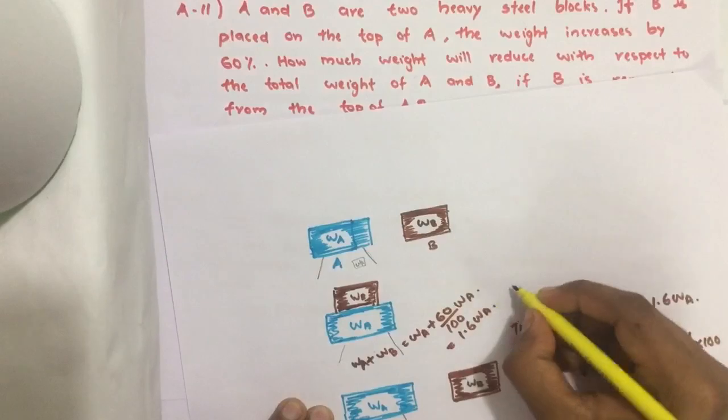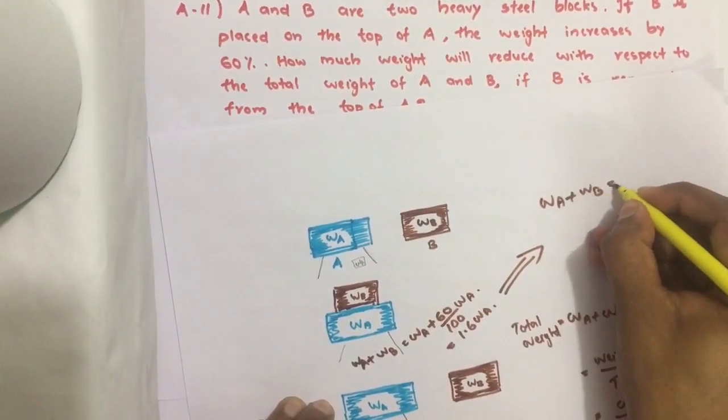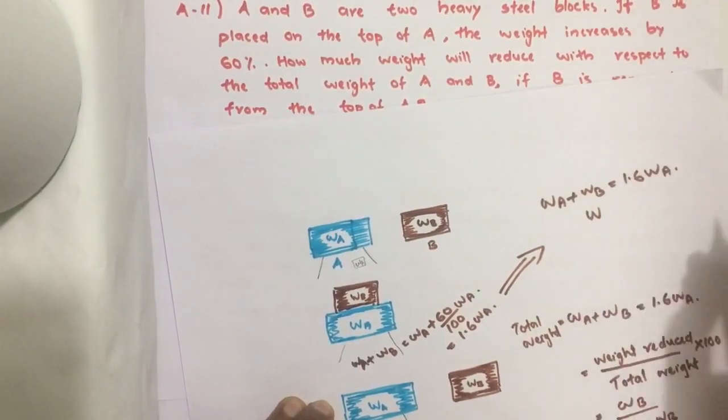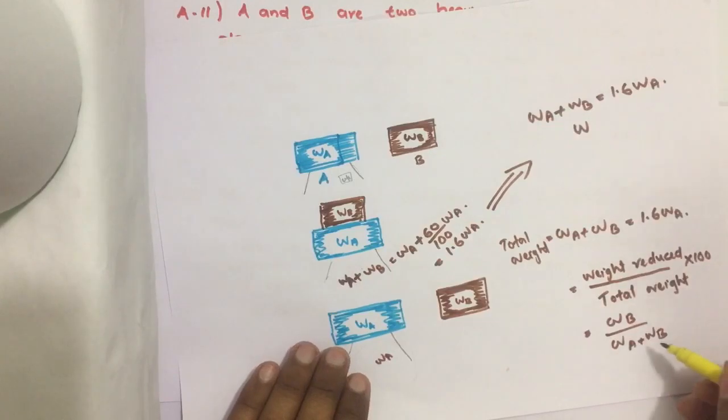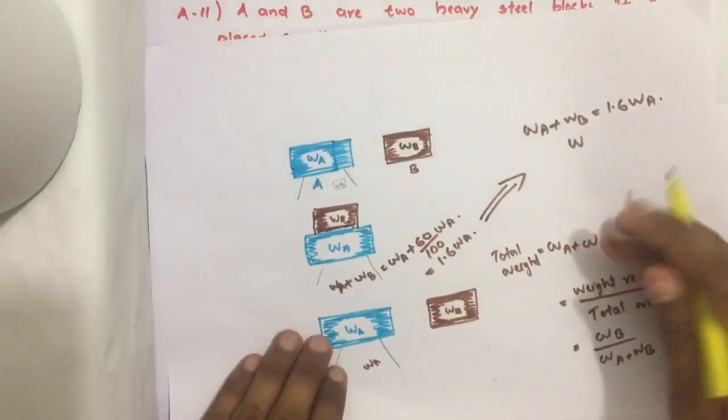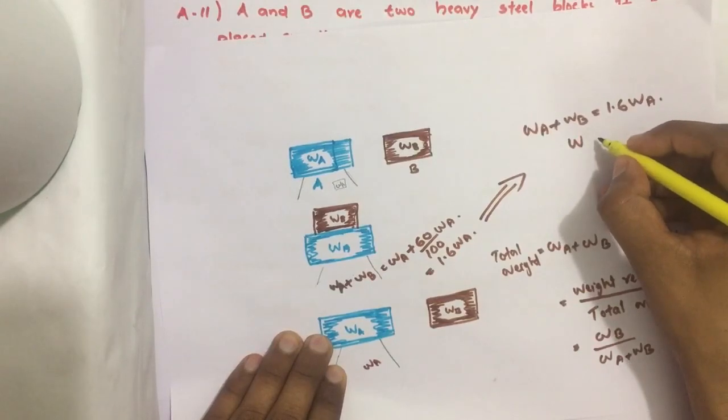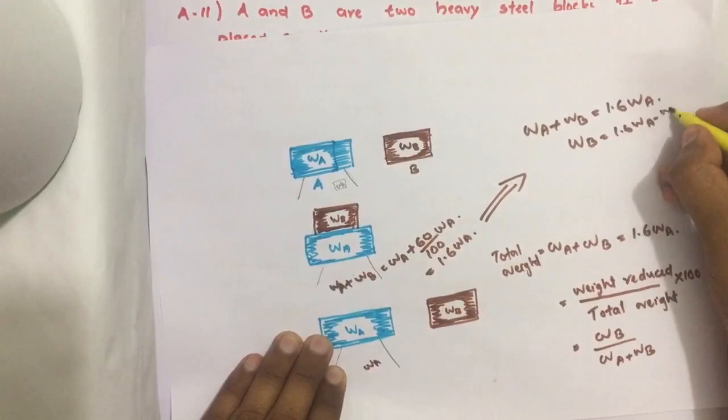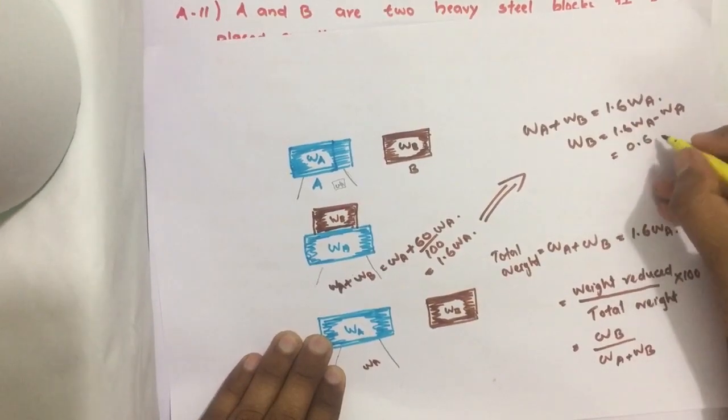From here we get WA plus WB equals 1.6 WA. Therefore WB, we are going to change WA in terms of WB. WB is equal to 1.6 WA minus WA, so we get 0.6 WA.